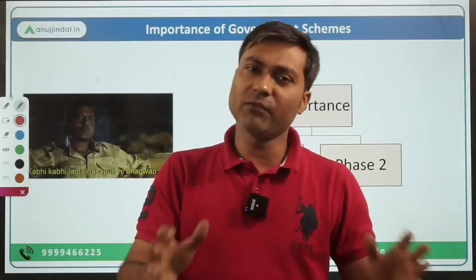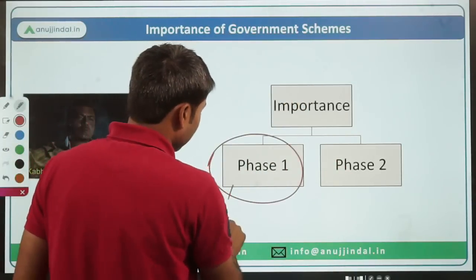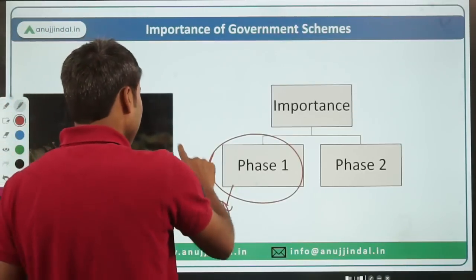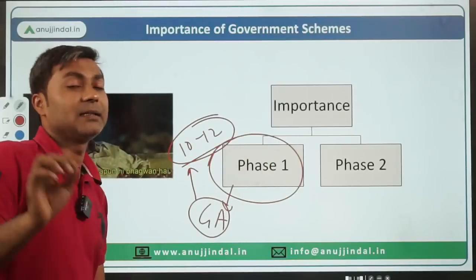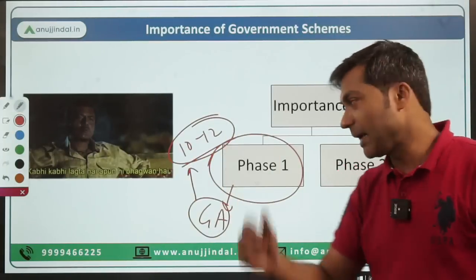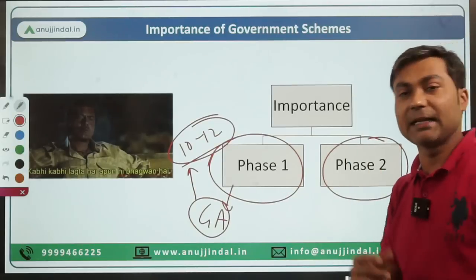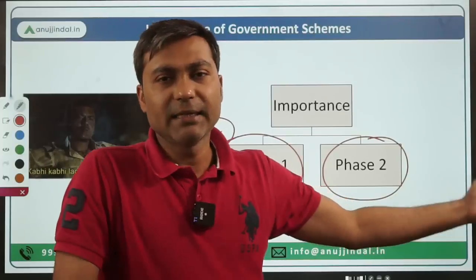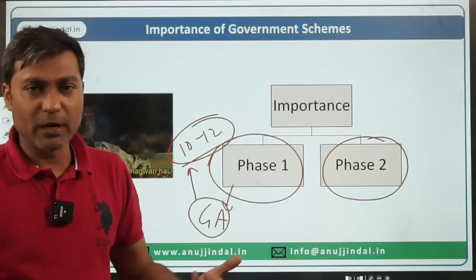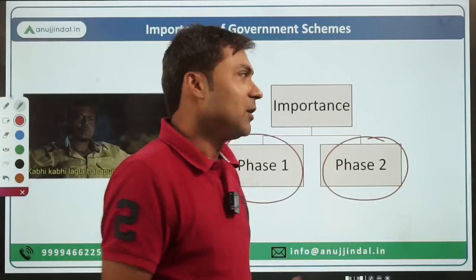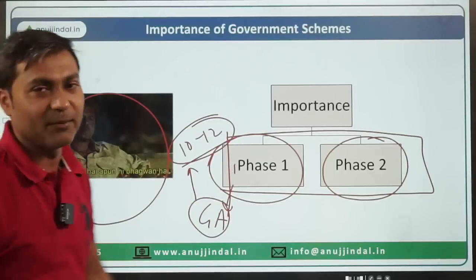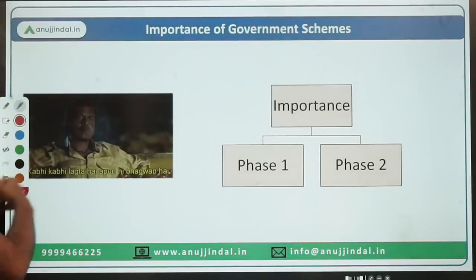So you must have an idea about the importance of government schemes. The government scheme topic is asked in Phase 1 GA, and these days they are asking questions from government schemes in Phase 1 as well — around 10 to 12 questions. Even one question can make a huge difference, and these 10 to 12 questions can make a very big difference. Of course, they are also asked in Phase 2, and they can ask any particular scheme in the objective part of the FM paper as well.